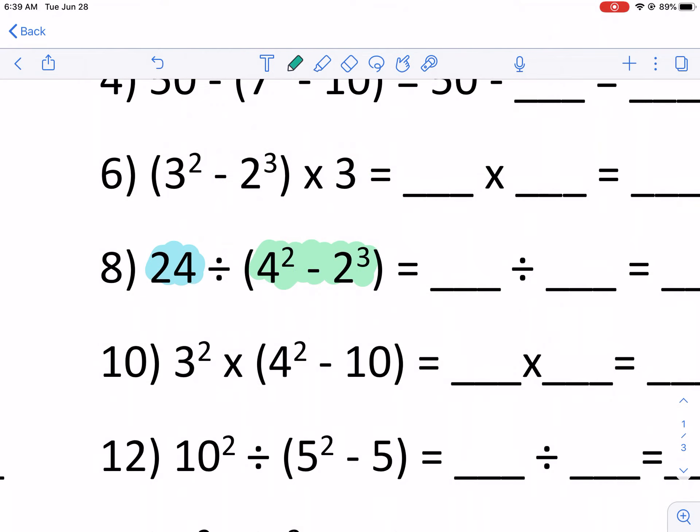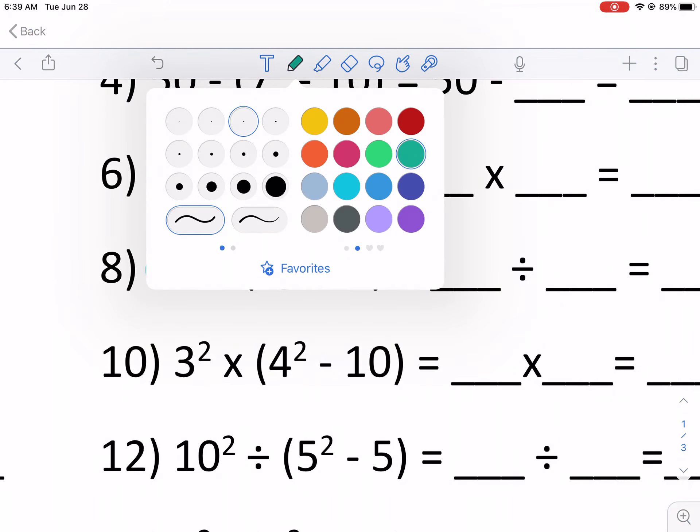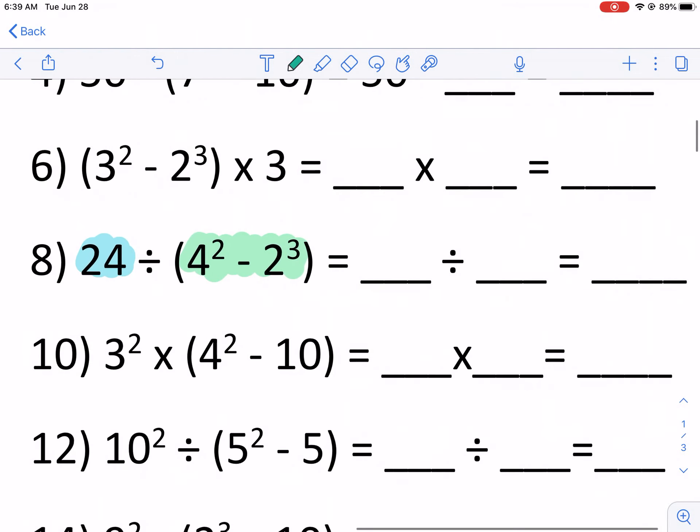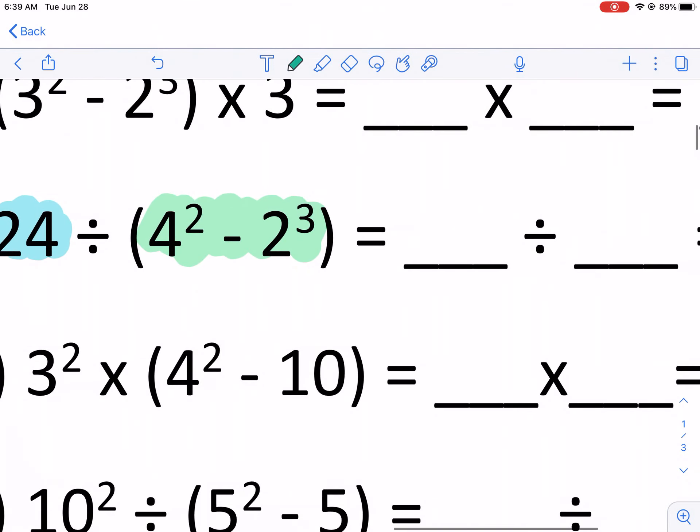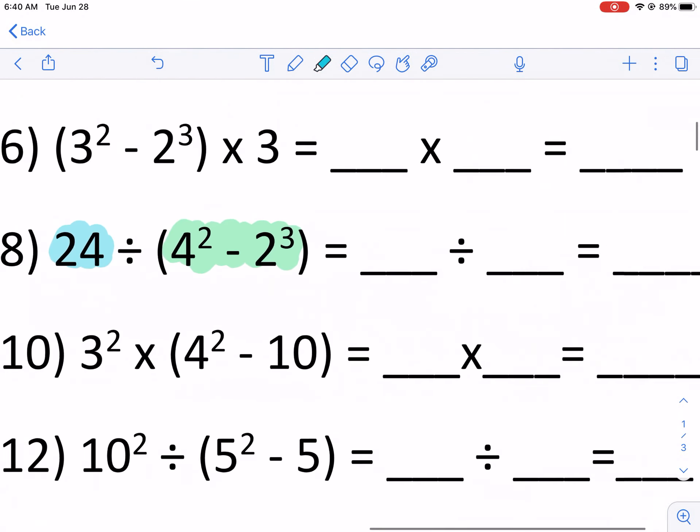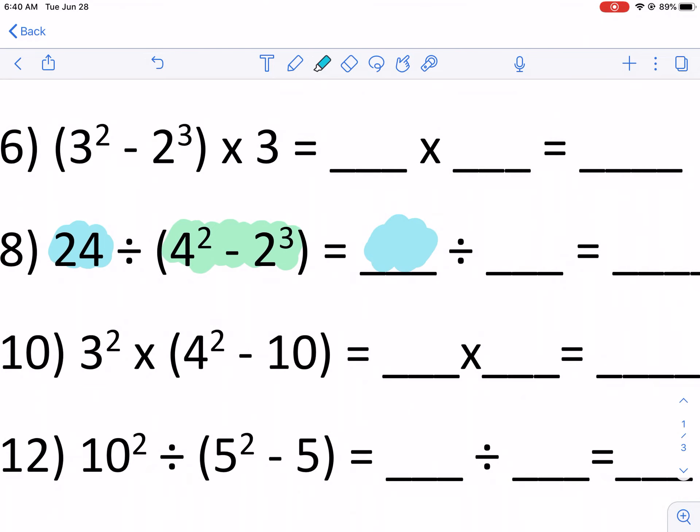So the 24 is just going to get copied down looks like, but I should follow order of operations first just to see if that is going to be the number that goes in that blank. But I'm pretty sure this 24 is going to go there. And then this result of that parentheses is going to go here. That's generally how this worksheet is set up.